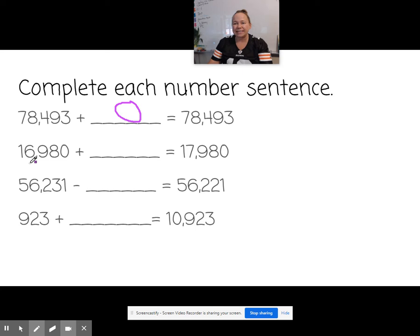All right. How about the next one? 16,980 plus something equals 17,980. Well, I can see that this one is 1,000 more than this one. So that means we must have added 1,000.